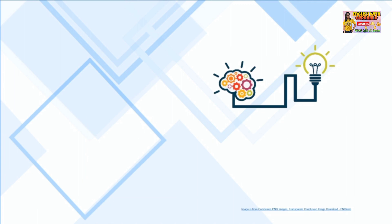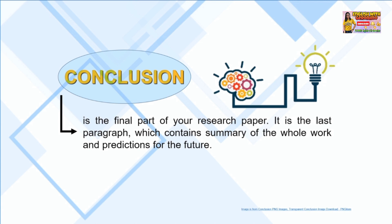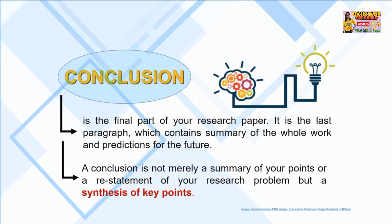When a writer or researcher gathers information during the process of comprehensive observation of primary sources — books, scholarly articles, scientific reports, academic journals, etc. — each topic should have its own summary in the end that will briefly conclude the ideas discussed in the paper. A conclusion is the final part of your research paper; it is the last paragraph which contains a summary of the work and predictions for the future.